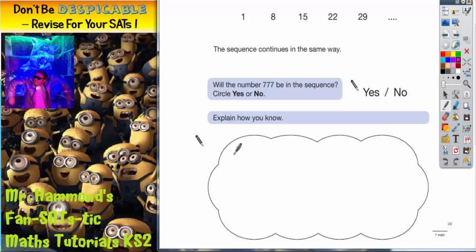The easiest way of explaining it is hopefully you should spot that 777 is in the 7 times table. So you could say 777 is in the 7 times table.